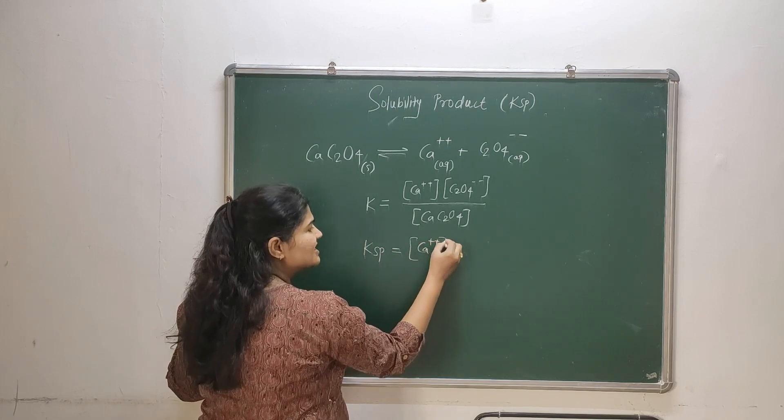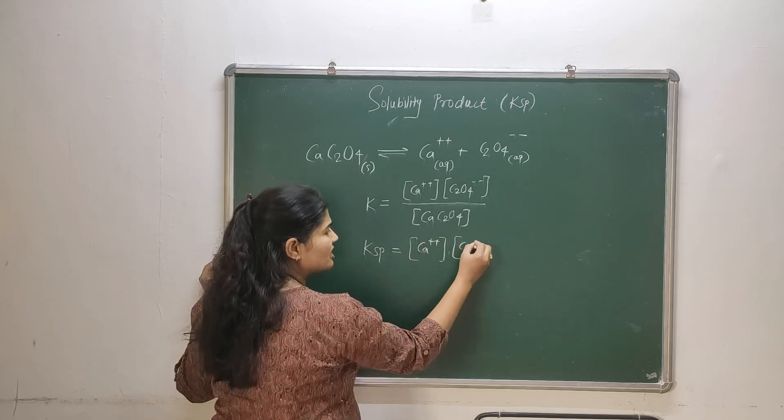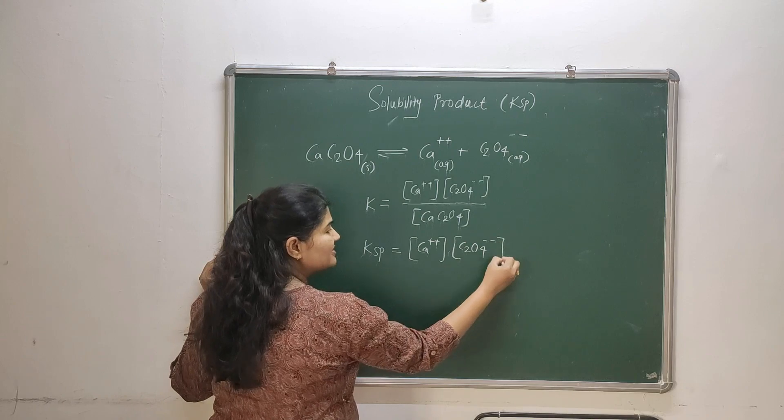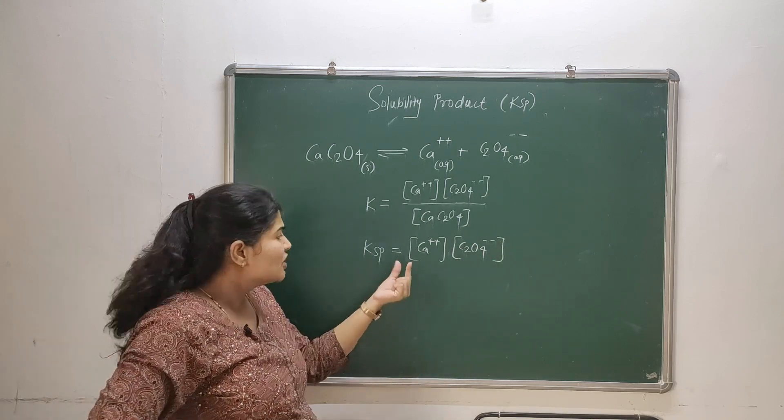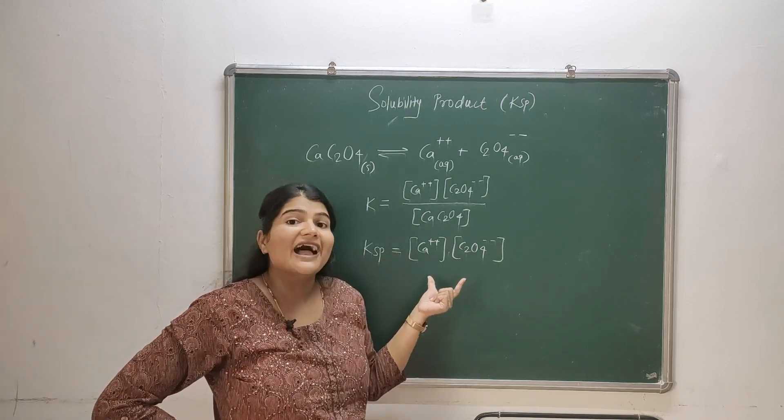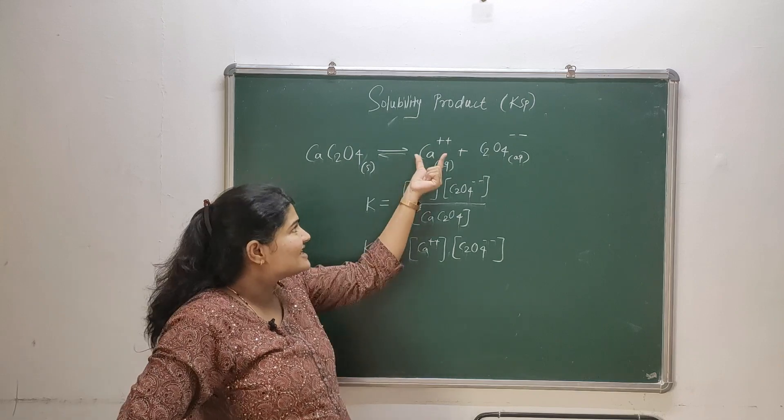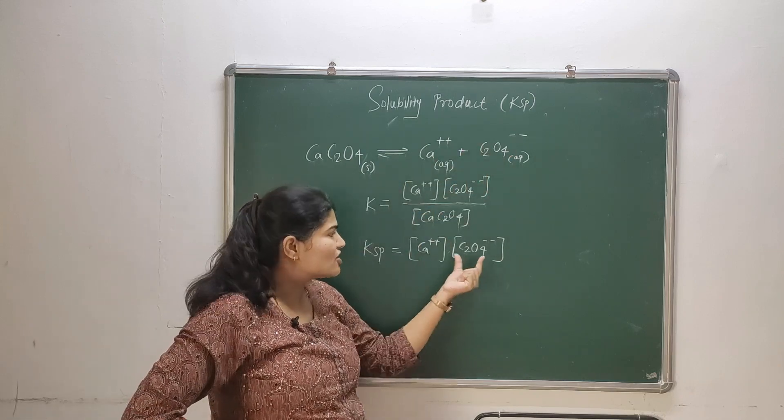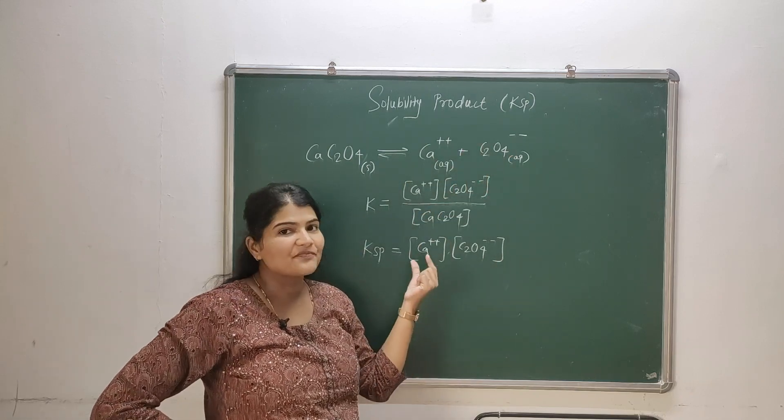And that constant will be called as Ksp, which is nothing but my solubility product. So what is solubility product basically? As you can see, solubility product is nothing but ionic product. These are the ions and these are the concentrations of ions we are taking product of them.